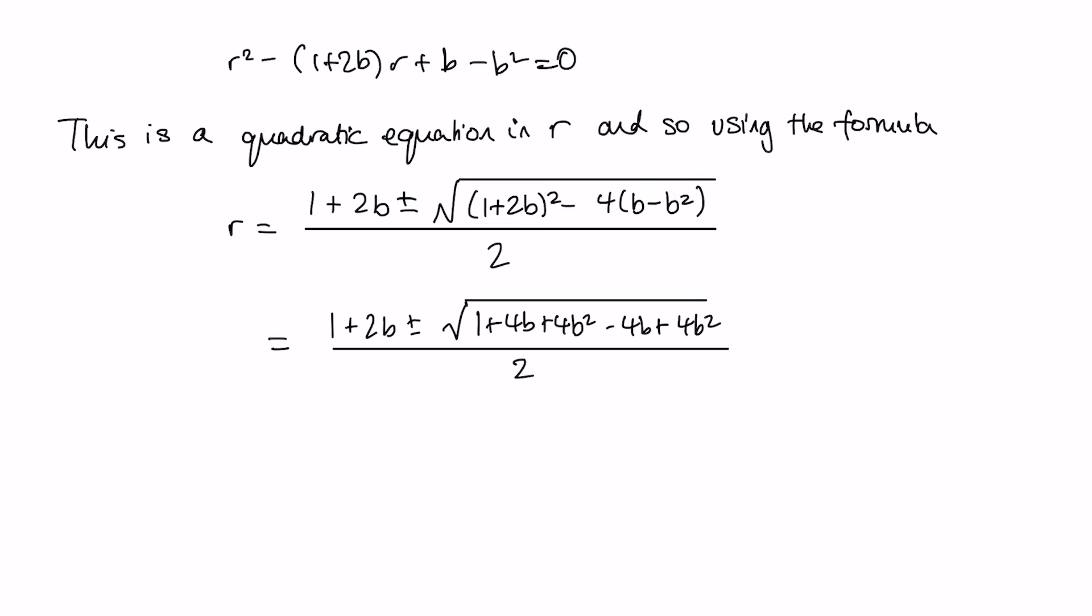So we do all of that multiplying out and simplifying, and we get this form: (1+2b ± √(1+8b²))/2. In fact, we'll only be interested in the plus solution that gives us positive numbers here.